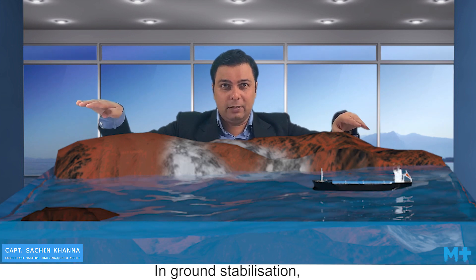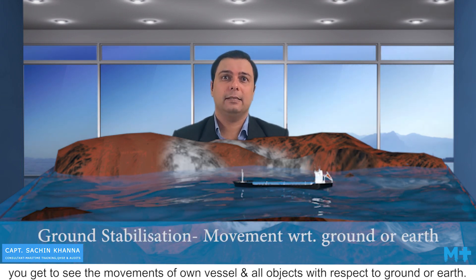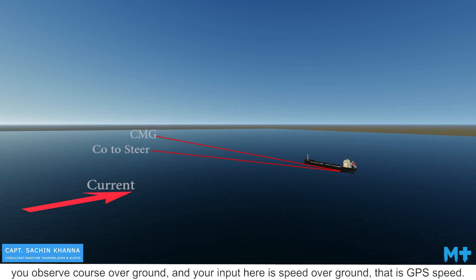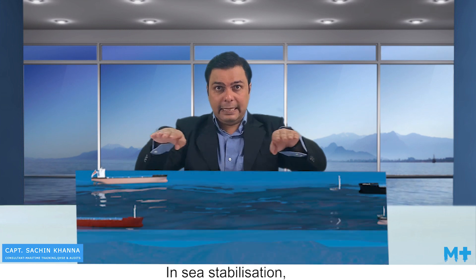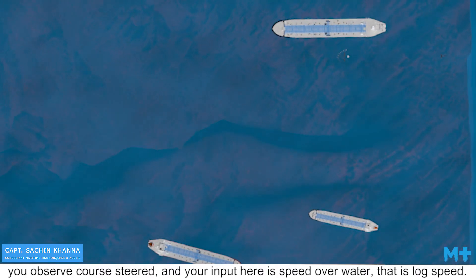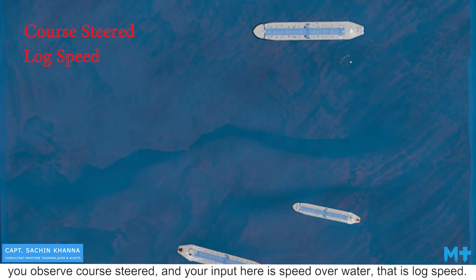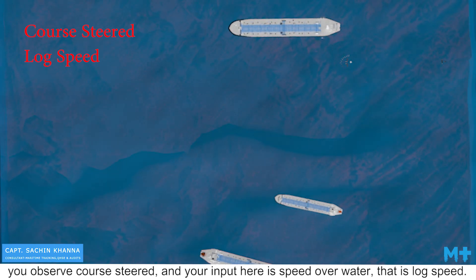In ground stabilization, you get to see the movement of your own vessel and all objects with respect to the ground or earth. In other words, you observe course over ground, and your input here is speed over ground — that is, GPS speed. In sea stabilization, you get to see the movement of your own vessel and all objects with respect to, or through, water. In other words, you observe course steered, and your input here is speed over water — that is, log speed.